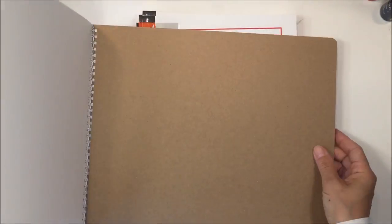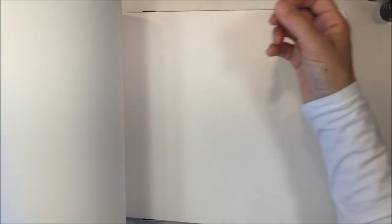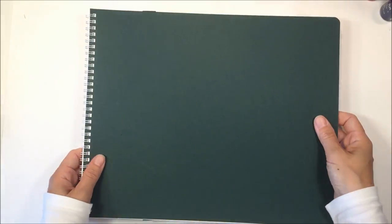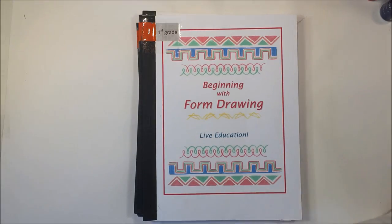This is a typical main lesson book for first grade. It's quite large and I think the dimensions are 22 by 17 inches. You do want to make it large because they are still working on their gross motor skills at that age, and this makes it a lot easier for them.